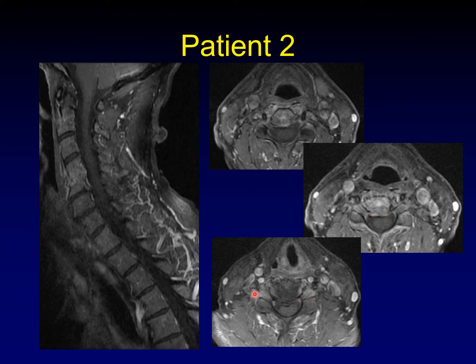We can see abnormal enhancement within the neural foramina. This extensive enhancement is the result of infection. This is a discitis osteomyelitis with collapse of the disc and abnormal enhancement that is infection in the surrounding soft tissues.